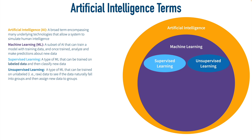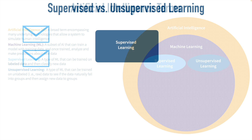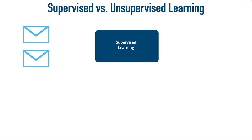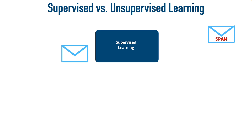With supervised learning, the training data that we feed into our system is going to have a label on it. Once our system learns what labels get applied to what patterns, it's going to be able to classify and label new data. For example, supervised learning might be used to identify spam email. If we've trained our system with lots of examples of email messages — labeling these as spam and these as not spam — then when new email messages come along, our system will be able to interrogate that email and label it as either spam or not spam based on the training data we gave it.